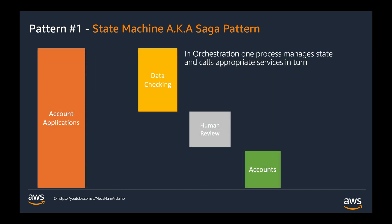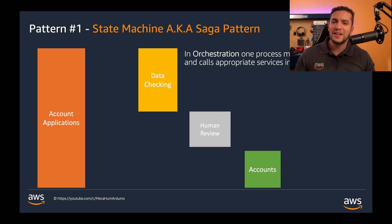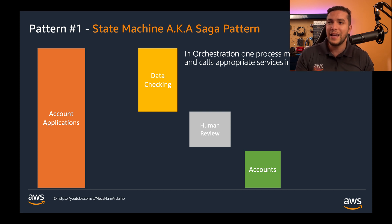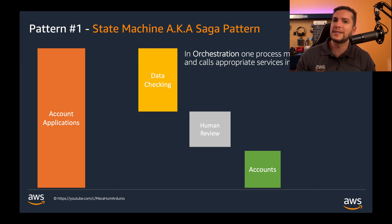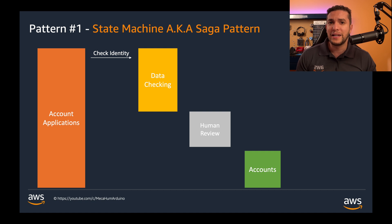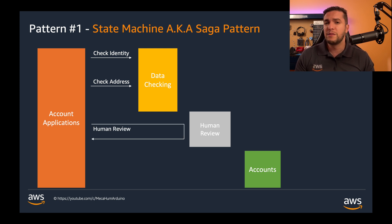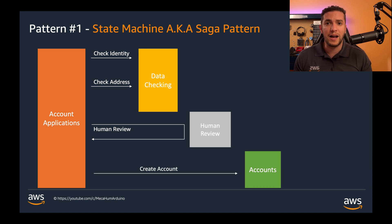Zooming out, it becomes clear that we have an instance of service orchestration managed from the point of view of the account application service. It makes calls to other services and reacts to their responses in a stateful manner — the state is transitioned and passed to the next step. When a new application is received, it calls the data checking service, verifies the address, involves a human reviewer if checks come back with flags, and finally calls the account service to open a new account.